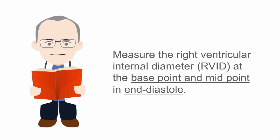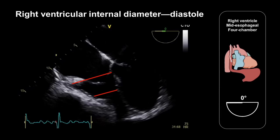In order to quantify the size of the right ventricle, we should measure its internal diameter at the base point of the right ventricle and also at its midpoint, and we should make this measurement in end diastole. So this is where the measurements are made — at the base of the right ventricle and also at the midpoint of the right ventricle. We should time these measurements in the cardiac cycle using the ECG trace so that they are made at the end of diastole.